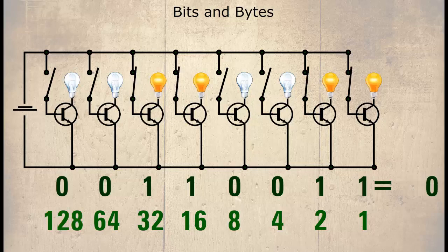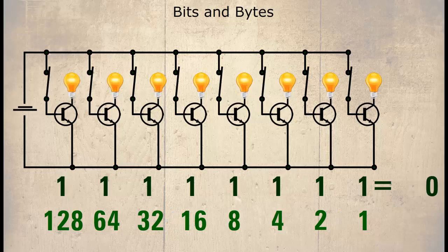Let's continue to double the last number and place them under the next transistors, so it would read eight, sixteen, thirty-two, sixty-four and one hundred and twenty-eight. We can see that binary 10000000 is equal to decimal 128. And if we add 128, 64, 32, and so on together, it would equal 255.